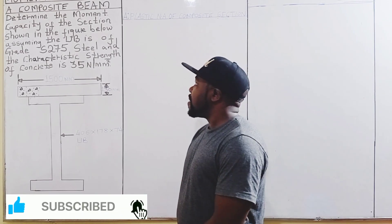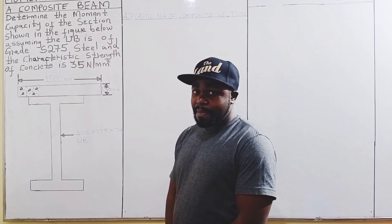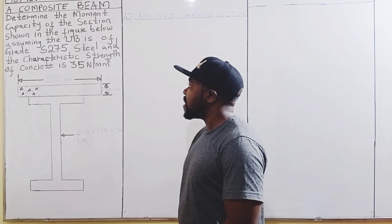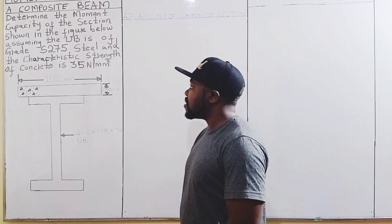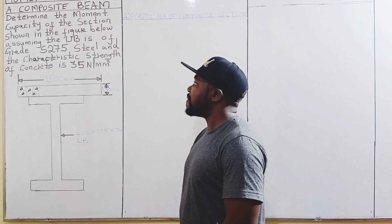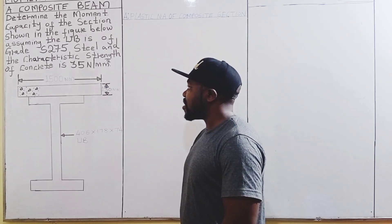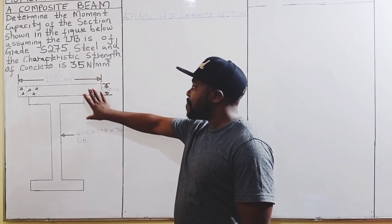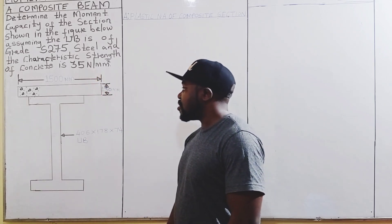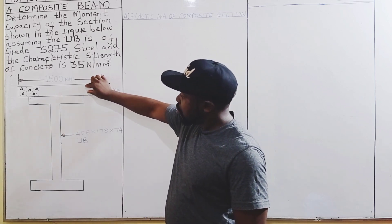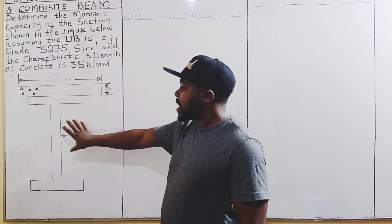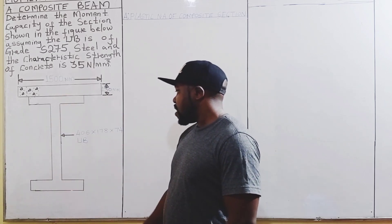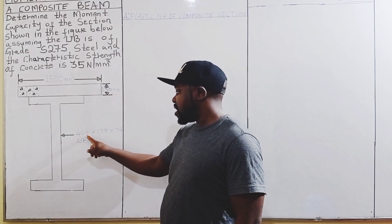Today we are going to determine the moment capacity of a composite beam. The question is: determine the moment capacity of the section shown in the figure below, assuming the UB is of grade S275 steel and the characteristic strength of concrete is 35 newtons per square millimeter. The section consists of a concrete flange and a universal beam section in the form of an I-section, with serial size 406 by 175 by 74 UB.